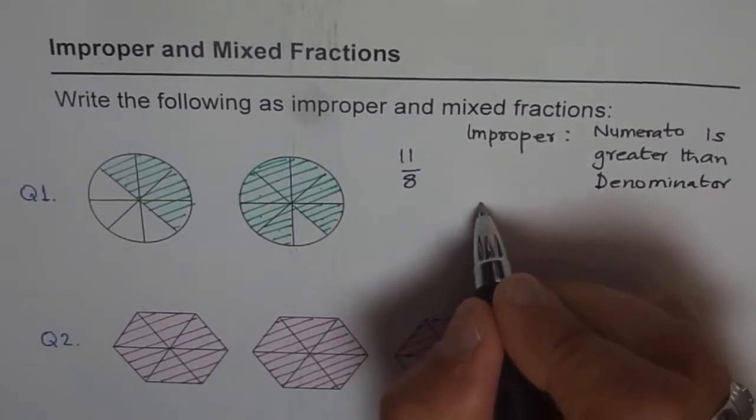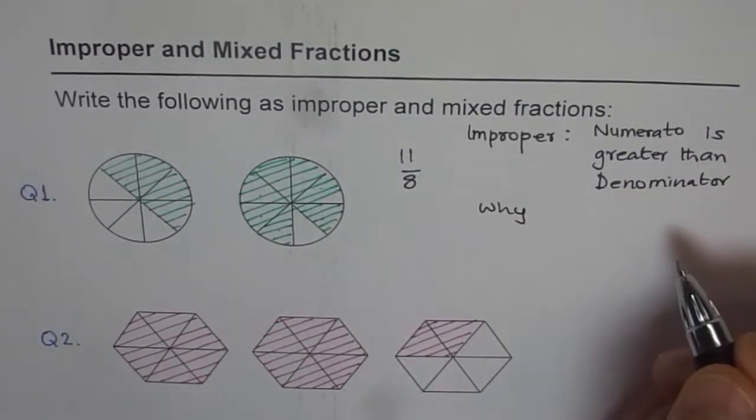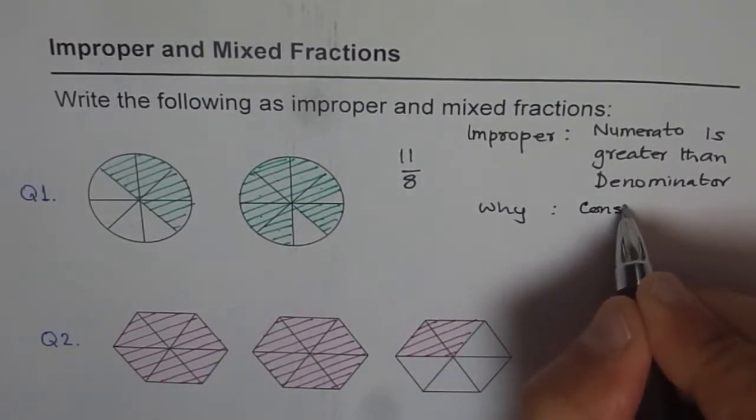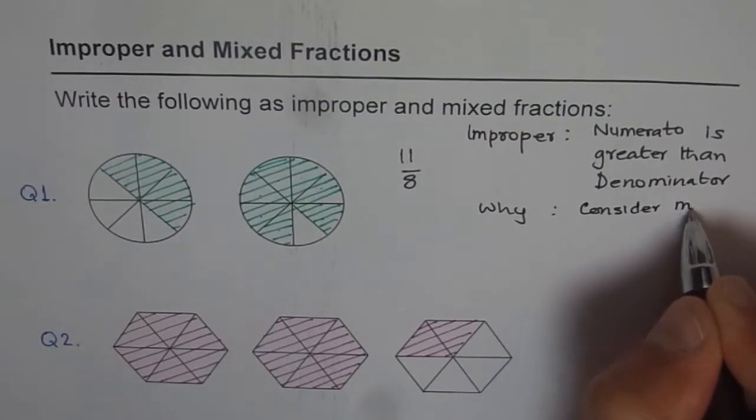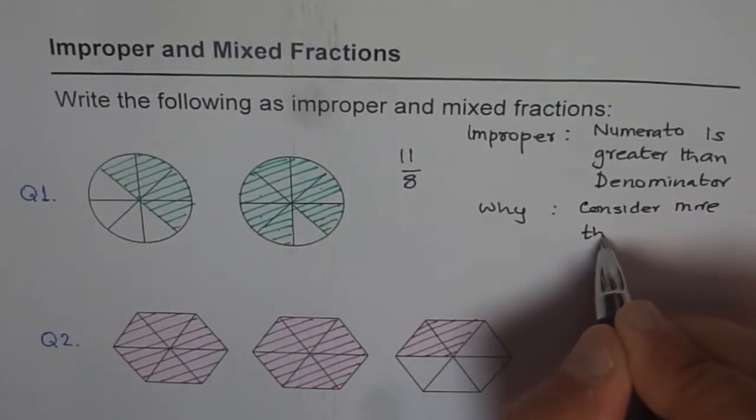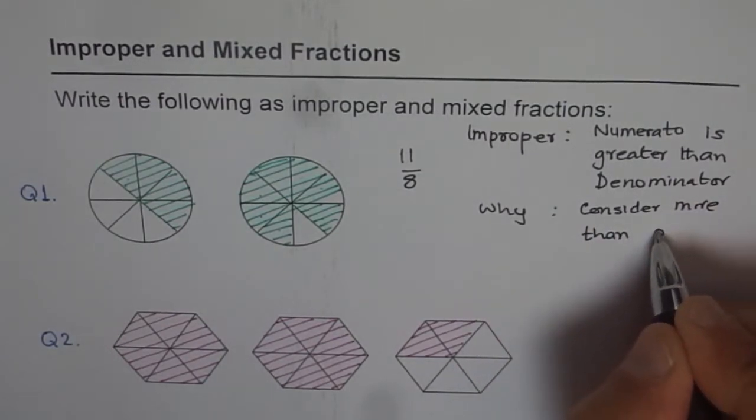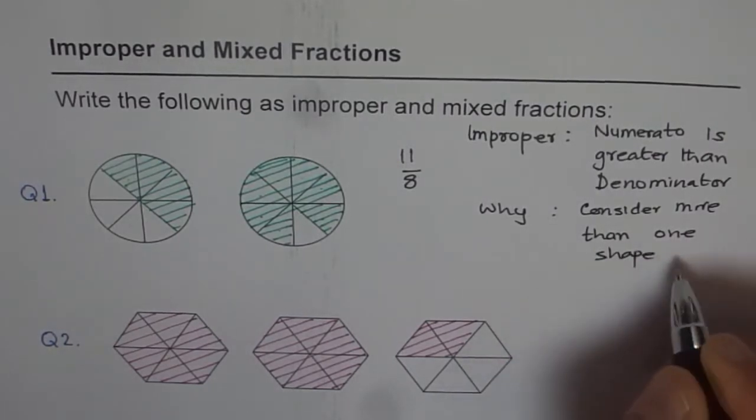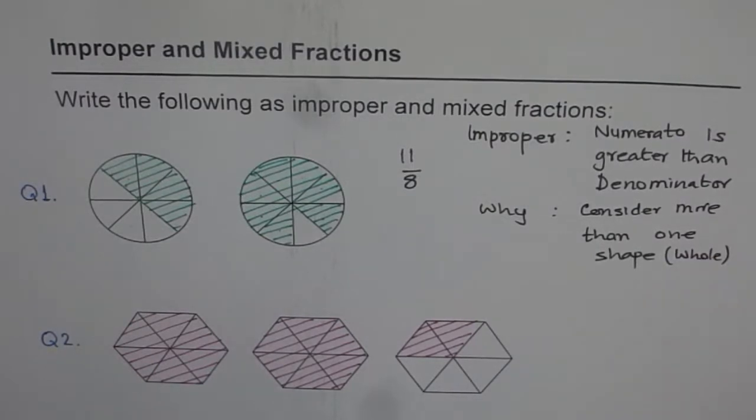So that is why it is called improper fraction. And why do we have so? Why is it so? It is because we consider more than one shape. Do you see that? More than one shape or one figure or one whole. You can say one whole. So that is why we get improper fractions.